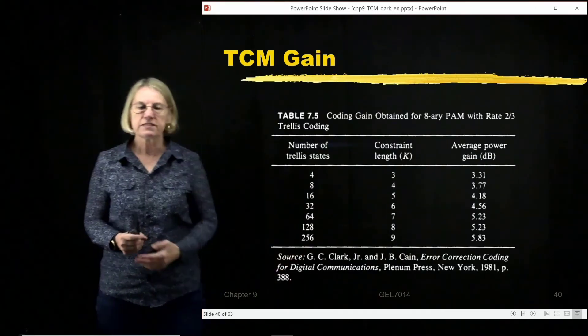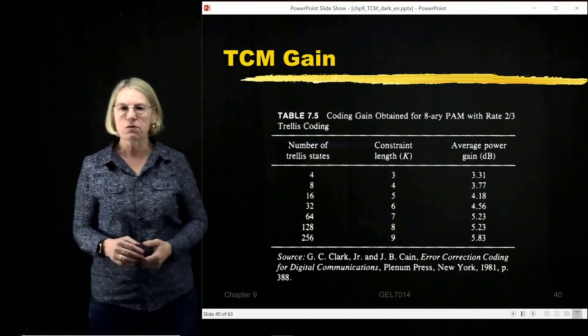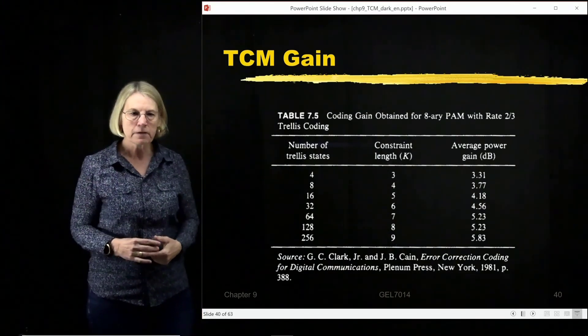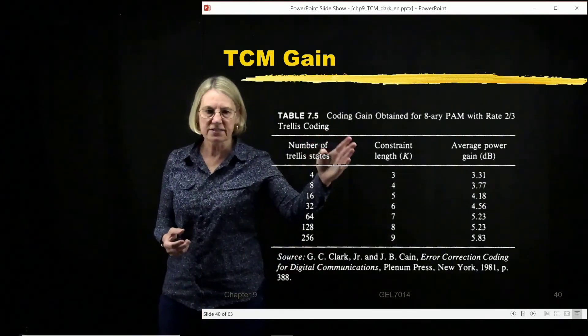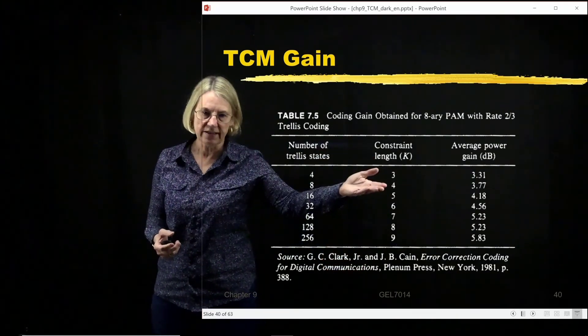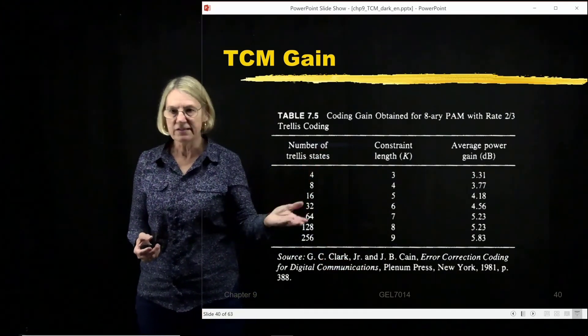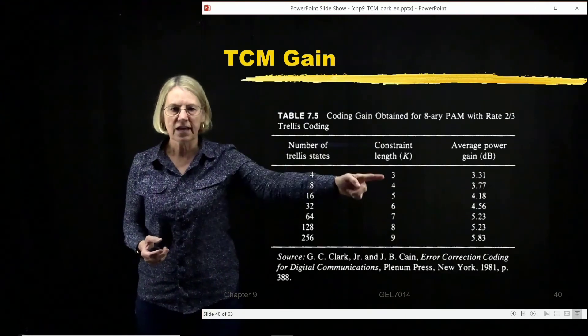So this is a summary of typical coding gain that you can see with Trellis coded modulation. This is various constraint lengths, and of course, the constraint length determines the number of states in the trellis, so 2 to the k minus 1.